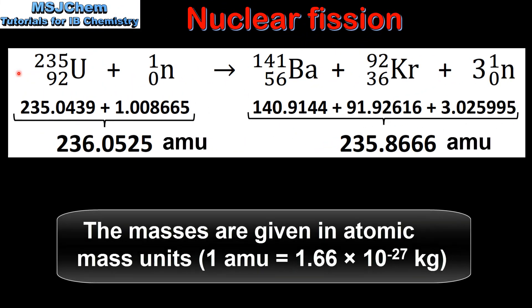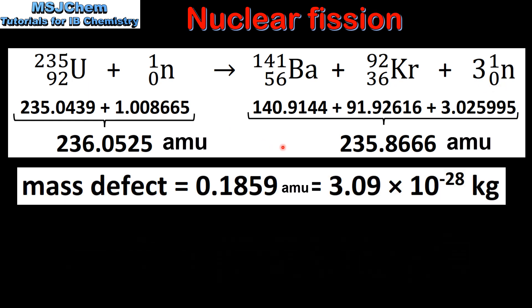Next we will calculate the energy released in a nuclear fission reaction. In this reaction we have the nuclear fission of uranium-235. The products are barium-141, krypton-92 and 3 neutrons. If we subtract the mass of the products from the mass of the reactants we get the mass defect.